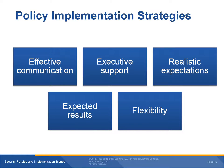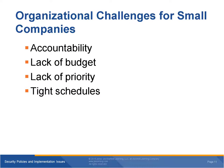A strategy for implementing policy includes having effective communications, executive support, realistic expectations, showing expected results, and flexibility. You must realize the culture you are working in and show people how implementation will help the organization. You need to be flexible about how you implement strategies across different technologies and cultures. Organizational challenges for small companies include accountability, lack of budget, different priorities, and tight schedules.